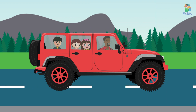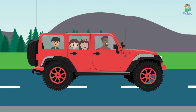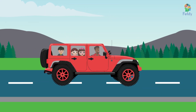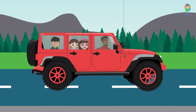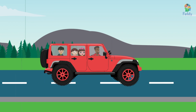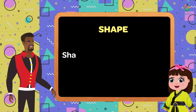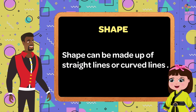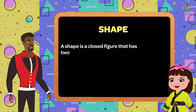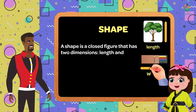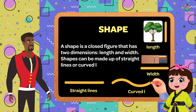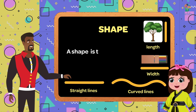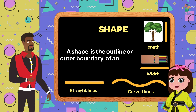So we've learned about straight lines and curved lines; now let's see about shapes. Well Latifa, the Sanjiang Plains are teeming with different shapes. A shape is a closed figure that has two dimensions: length and width. Shapes can be made up of straight lines or curved lines. A shape is the outline or outer boundary of an object.